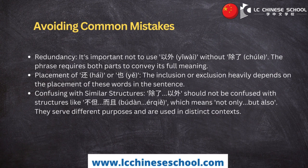It is important not to use 以外 without 除了, as the phrase requires both parts to convey its full meaning. The inclusion or exclusion heavily depends on the placement of 还 or 也 in the sentence. 除了…以外 should not be confused with structures like 不但…而且 (bùdàn…érqiě), which means 'not only…but also' — they serve different purposes and are used in distinct contexts.